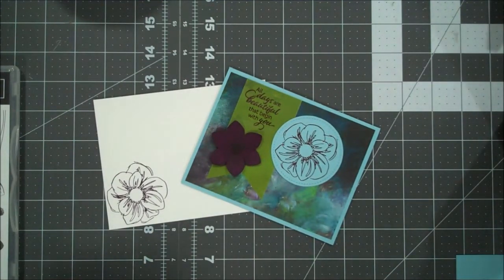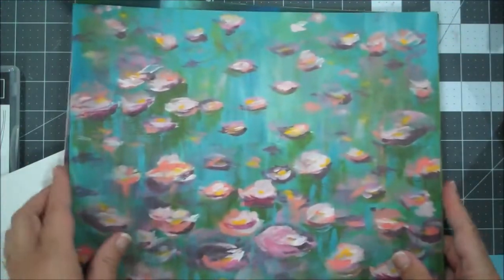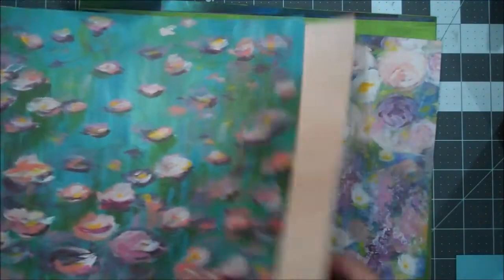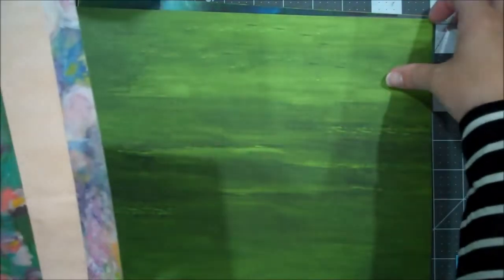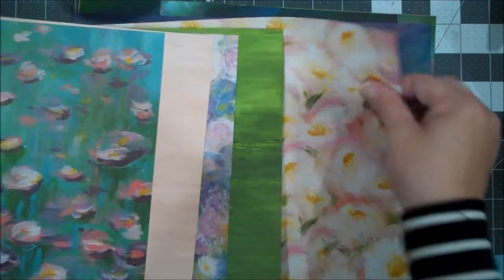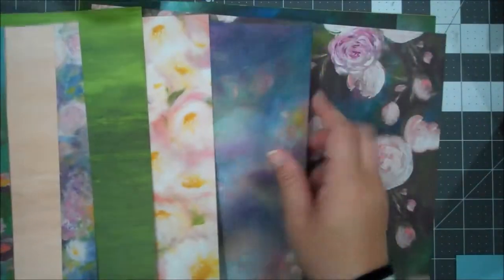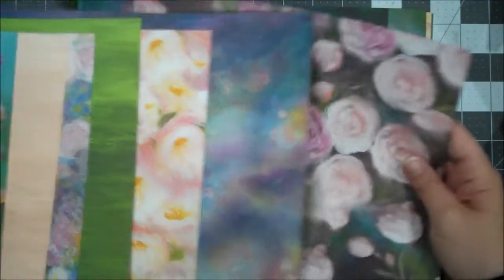So there's some great sentiments here and there's some gorgeous paper that coordinates with this suite as well. So let me pull that out. This is called Perennial Essence Designer Series Paper. And you can see it's kind of like a painted look but the colors are just gorgeous. So this is very versatile. You can use this paper in many different ways and there's some plainer sheets in here as well.